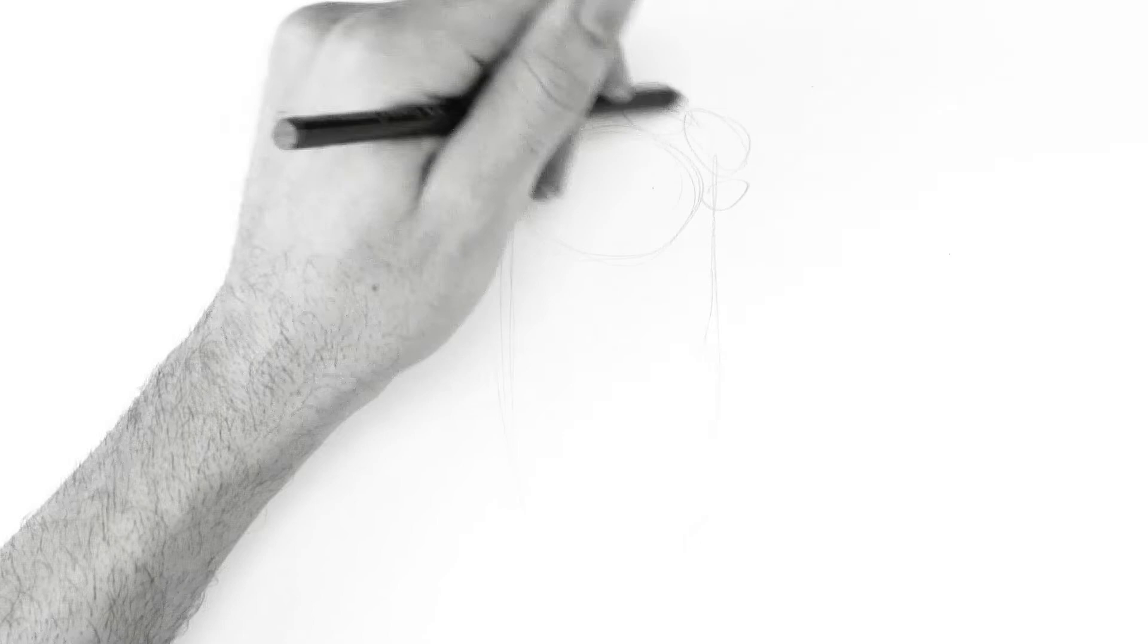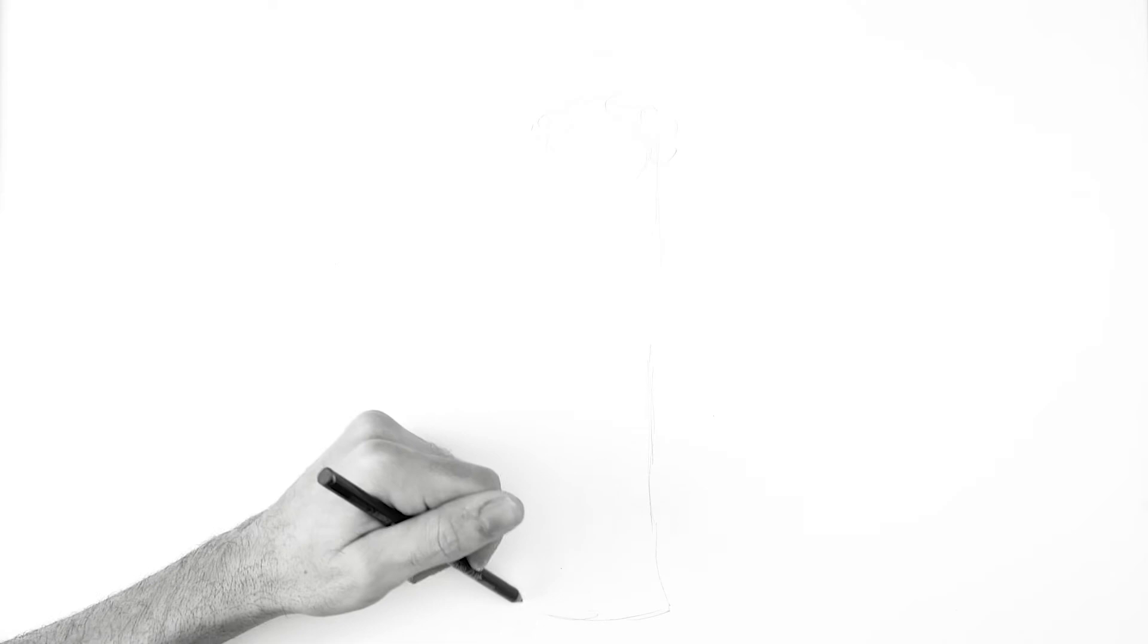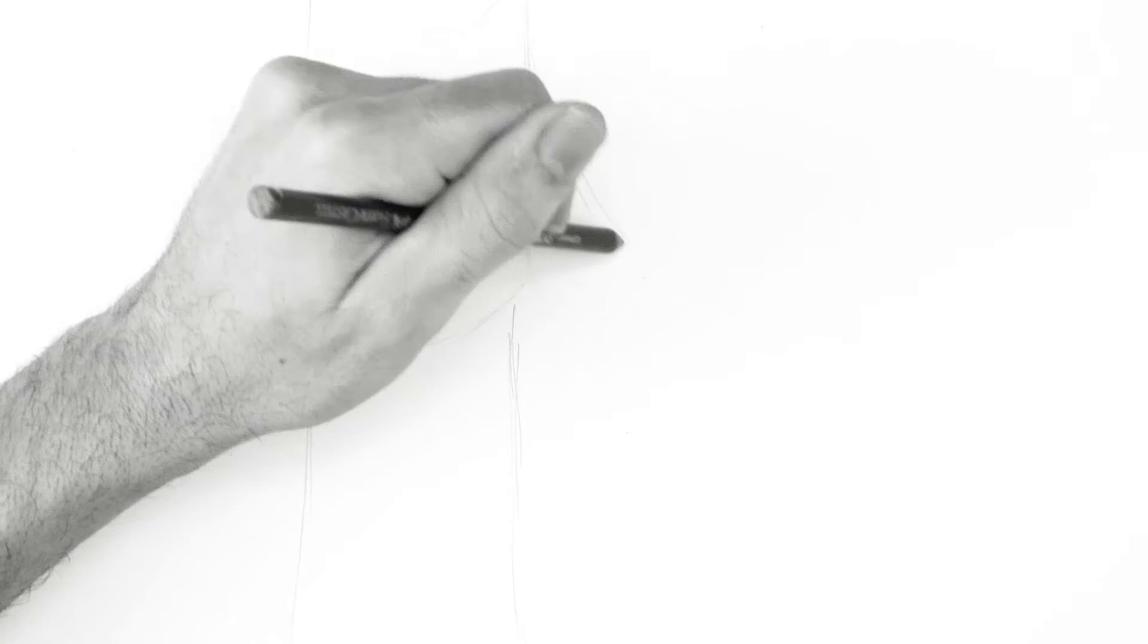I'm going to put a bunch of these little circles here that eventually will become oak leaves around the druid's head. Druids apparently wore robes, so we're going to draw this body, but really it's just one big rectangle.